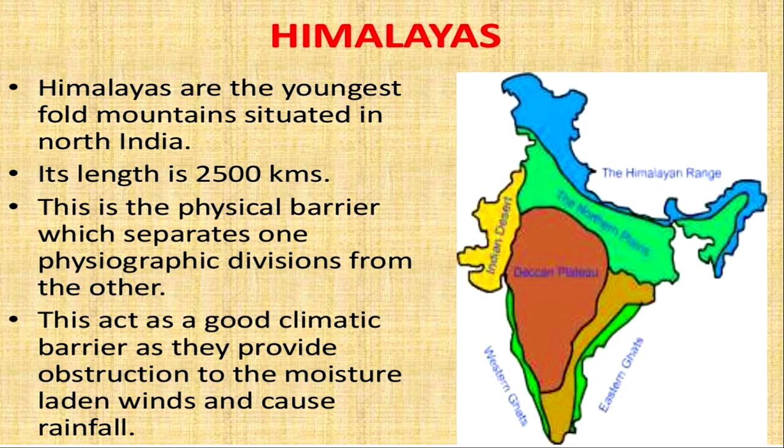The Himalayas are young fold mountains which have been recently formed. If we talk about the geological history of India, across the globe these Himalayas have been formed approximately 4 to 70 million years ago, and they are still growing. Their length is 2500 kilometers from west to east. They act as a physical barrier, separating India from China and the rest of the world, and also protect us from cold waves coming from the northeast, from Eurasia.